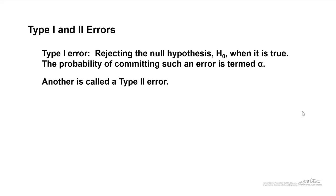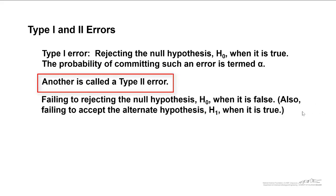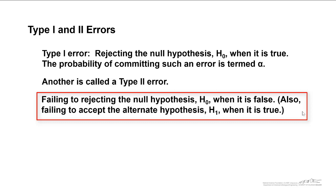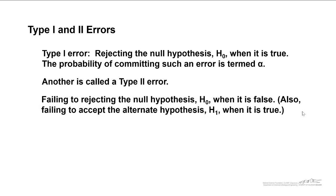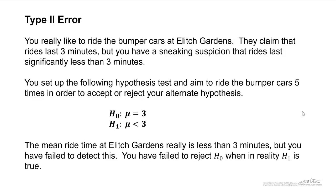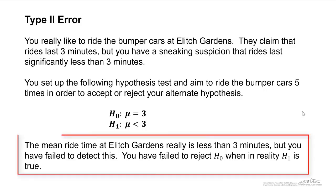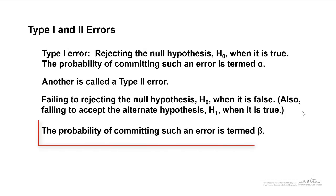There's another type of error, known as a type 2 error. You fail to reject the null hypothesis when in fact it is false — it's sort of the reverse of a type 1 error. You can also think of this as failing to accept the alternate hypothesis when in fact the alternate hypothesis is true. In terms of our example, the mean ride time at Elitch Gardens really is less than three minutes but you have failed to detect this in your sample. The probability of committing such an error is termed beta.